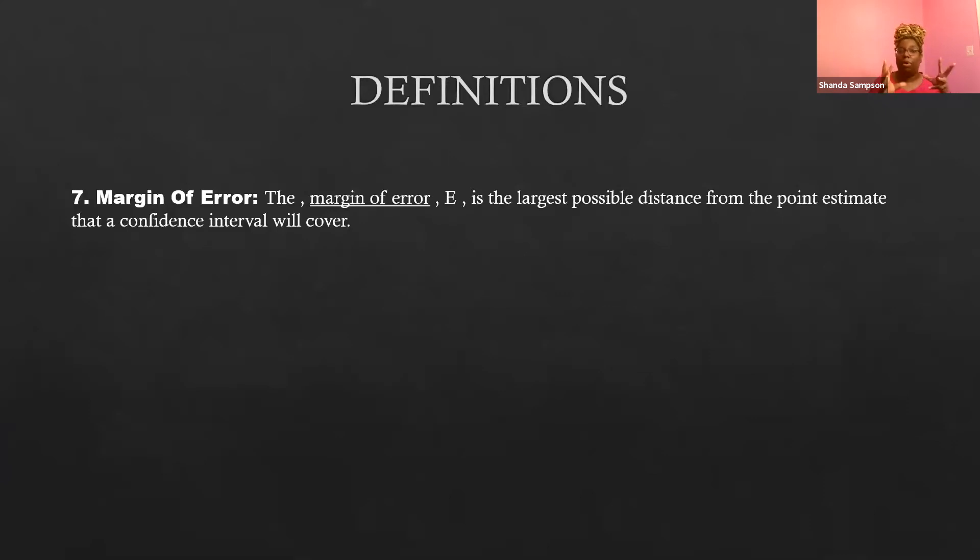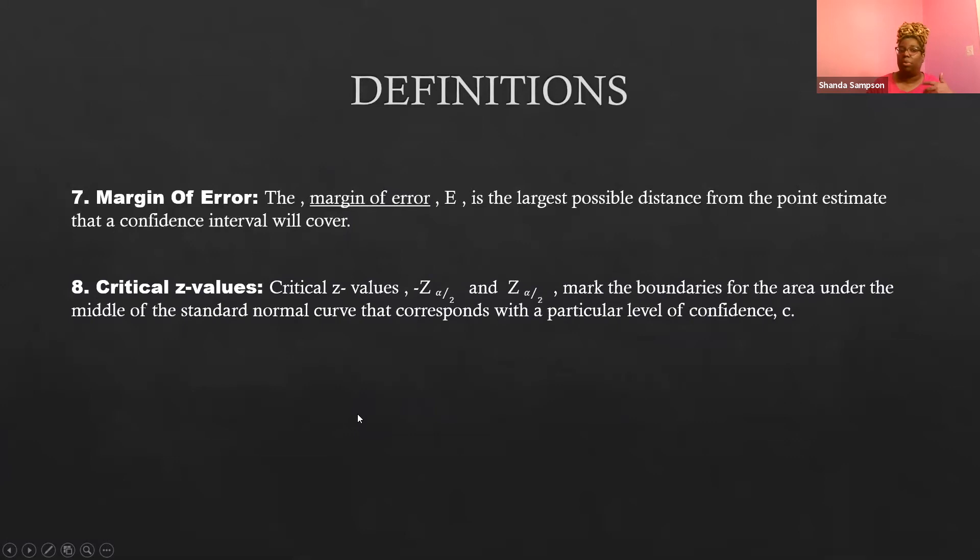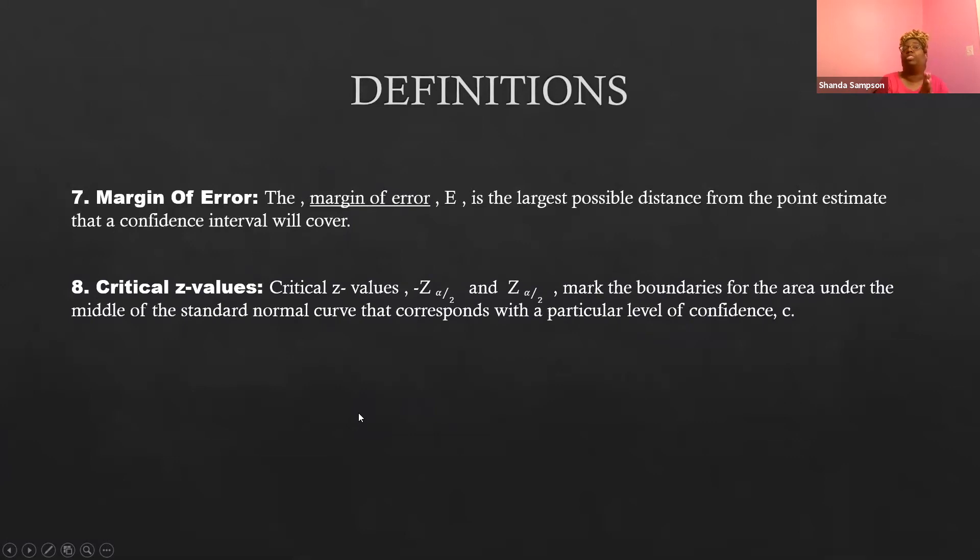It is the largest possible distance from the point estimate that a confidence interval will cover. So like I said, the number plus or minus something. Your point estimate, remember your point estimate for your mean was the sample mean. So it's X bar plus or minus some number, some error. So you're taking into account that there is some error in my data, some sampling error.